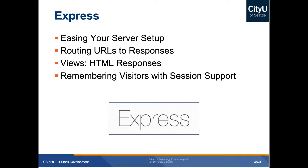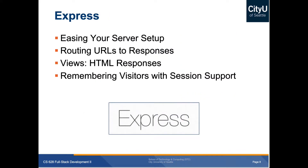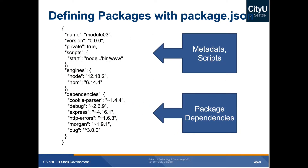Express provides easier server setup — you just require Express and instantiate an Express object. You can also instantiate a router object for routing. You can create HTML responses as views, and there's session support as well. We're still not doing the REST API here, which is why we're using session support to store a session. Defining packages with package.json uses JSON — key-value pairs with curly brackets — and includes metadata about the project and its dependencies.